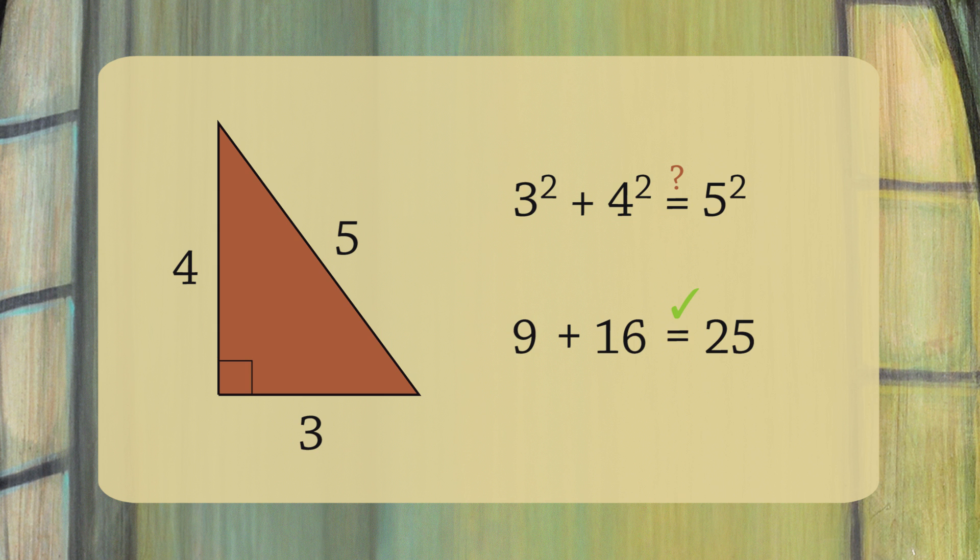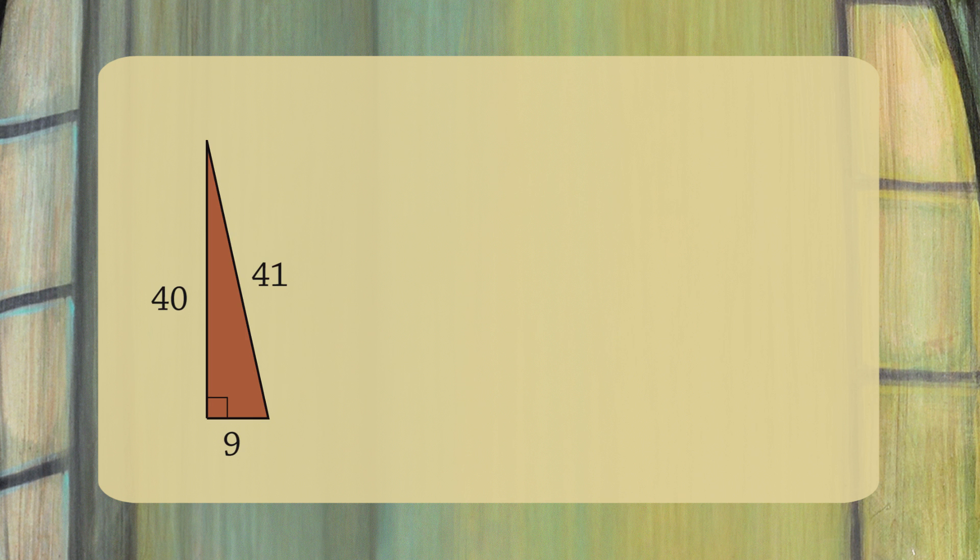Let's see a second example. Look at the triangle with sides 9, 40, and 41. 9 squared equals 81, 40 squared equals 1,600, and 41 squared equals 1,681. And 81 plus 1,600 equals 1,681.